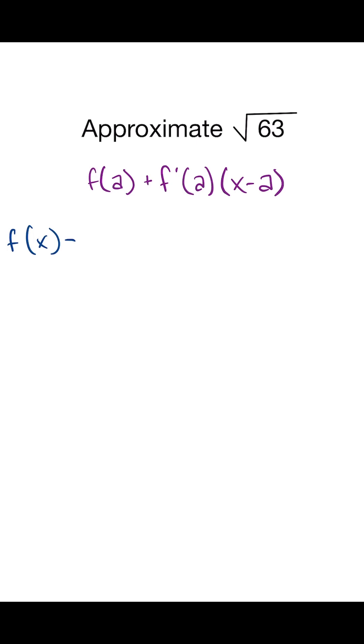We can think of this function as the square root of x, and if we take the derivative or slope of that function, we get one-half x to the negative one-half, or one over two times the square root of x.